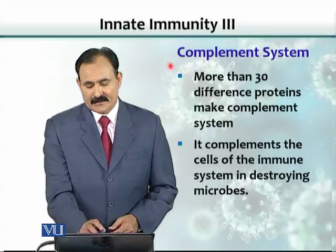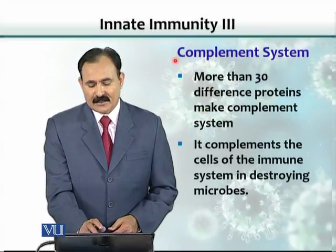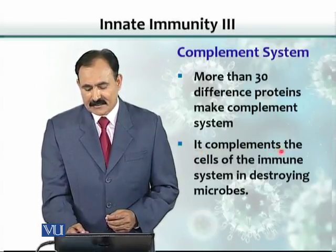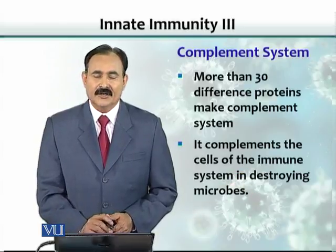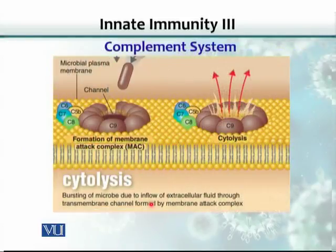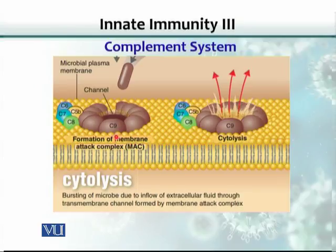The third component is a group of more than 30 proteins called the complement system. It is called the complement system because it complements the cells of the immune system in destroying microbes. It is part of the innate immune system. Complement proteins punch a hole in the microorganism — they attach to the surface and create a hole through which the internal contents of the cell are released, causing the cell to become lysed and killed.